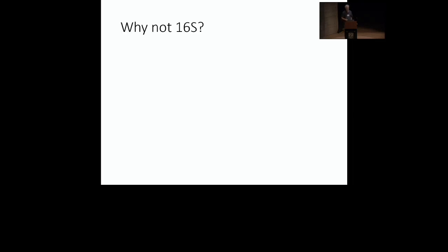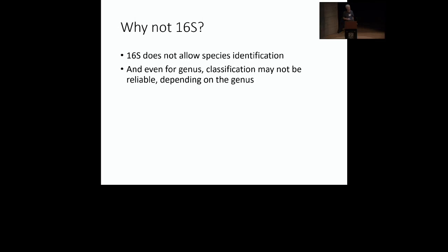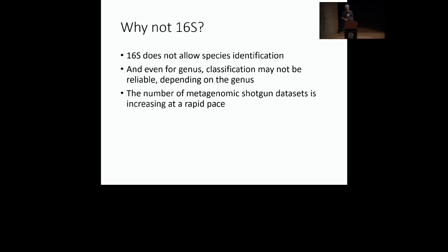I'd like to justify some of these constraints. One of them is: why not use 16S? The main reason is that 16S in general does not allow for species identification or classification, and even for genus classification may not be reliable, depending on the genus. Also, maybe ten or five years ago it would have made sense to not exclude 16S, but nowadays the number of metagenomic datasets based on shotgun data has increased so much that it's a very rich collection of datasets that needs to be mined.